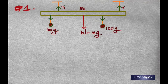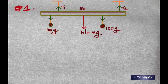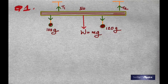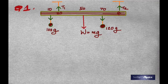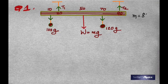The tension in the strings acts upward, as shown. We call them T1 and T2. That's the meter stick shown in a little more color, and we have to find the tension in the two strings. The mass of the meter stick is 80 grams.